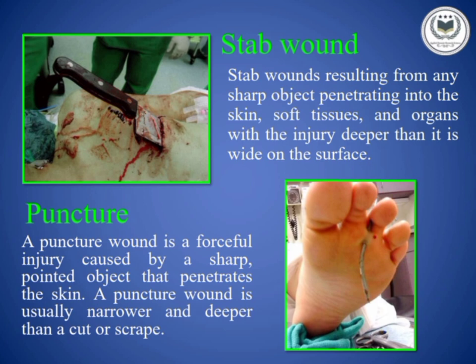Stab wound. A stab wound is a specific form of penetrating trauma to the skin that results from a knife or similar pointed object. While stab wounds are typically caused by knives, they can also occur from a variety of implements including broken glass bottles or ice picks, etc.